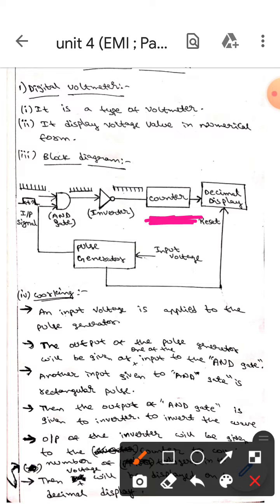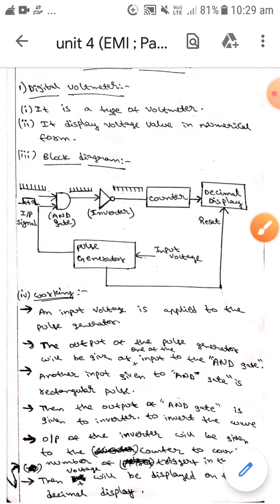As you all know, the number of triggers in the pulse is equal to the input voltage. So the input voltage will be displayed in the decimal display.